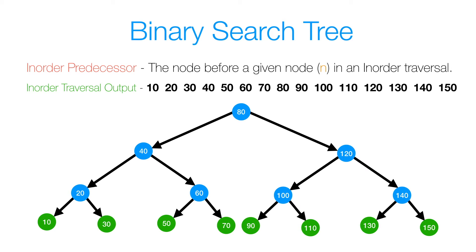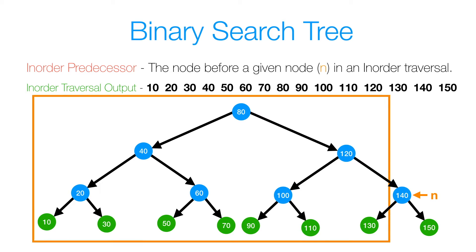Now what we're going to do is analyze this binary search tree and try to figure out where the in-order predecessor actually lies for some given node n. Suppose our node n was a node with data 140. Then all the nodes in this rectangle are going to be smaller than 140. However, only one of these nodes is actually the predecessor. Let's think about what an in-order traversal actually means — for 140, the value just before it has to be the value that's just smaller than 140.